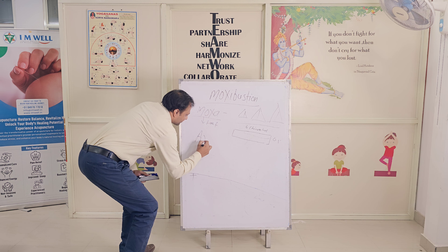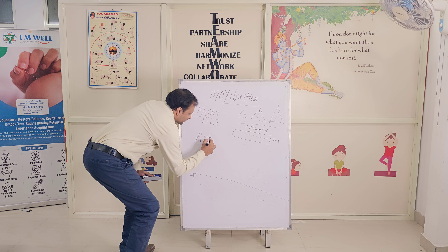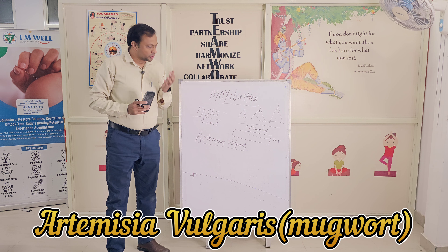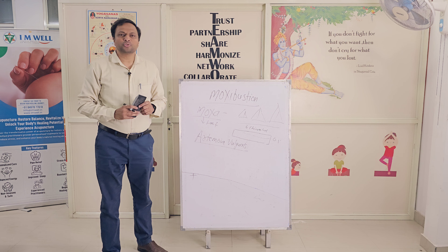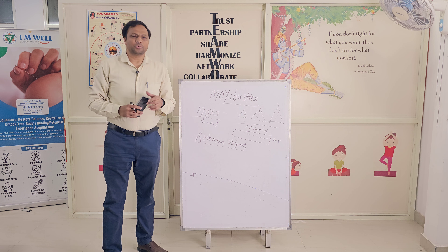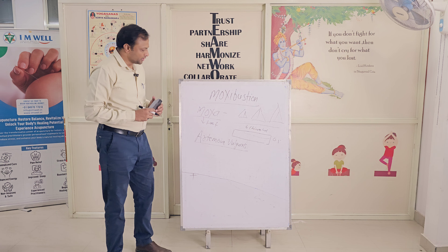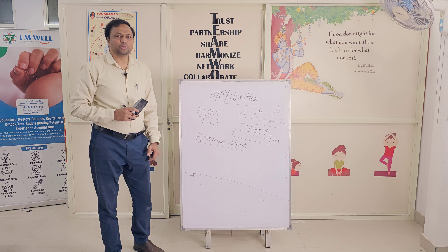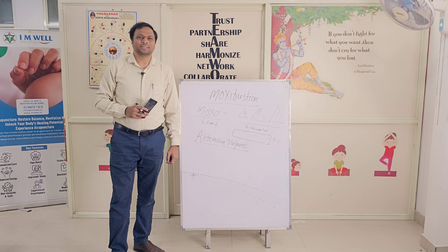Welcome, friends. The chemical name of moxa leaf is Artemisia vulgaris — this is the scientific name of the moxa leaves we use here. Moxa is used in various forms to balance or correct the chi or the prana shakti, as we discussed in the previous class according to the traditional Chinese concept.